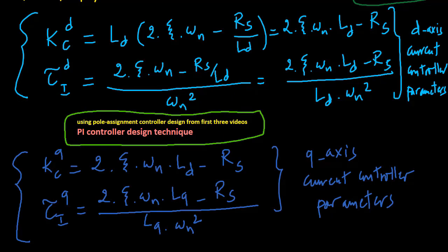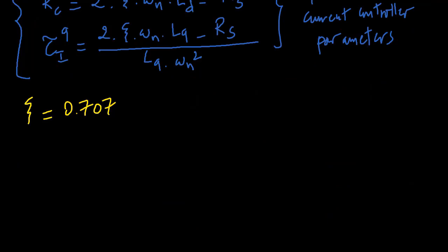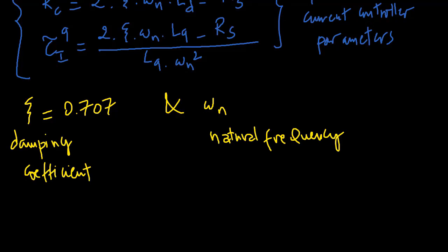In the design, the damping coefficient zeta is selected to be 0.707, and the natural frequency omega n is selected to determine the desired closed loop settling time, which also corresponds to the desired bandwidth of the closed loop system.